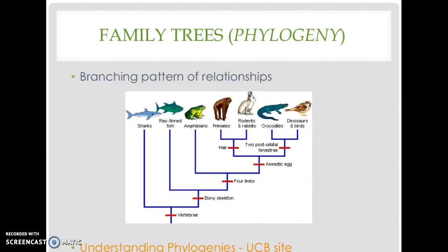The pattern of relationships produced by the evolutionary process is typically represented in a family tree, or phylogeny, which helps us understand the adaptations reflected in both anatomy, behavior, and most importantly, at the genetic level.